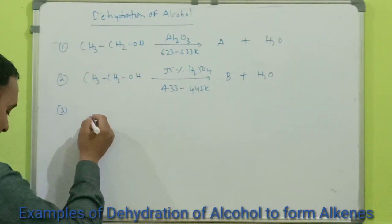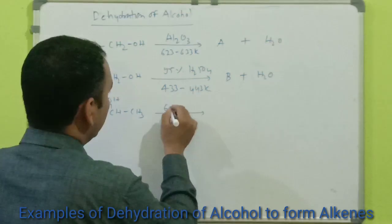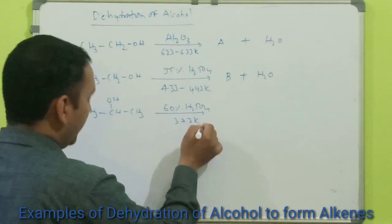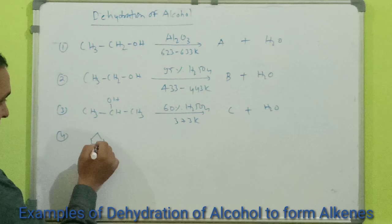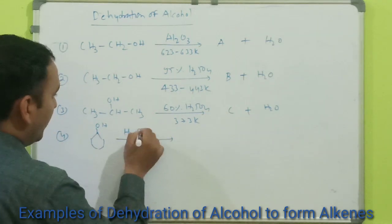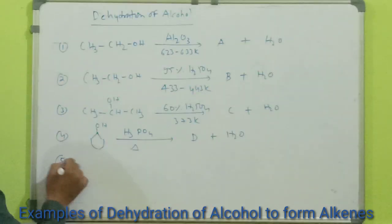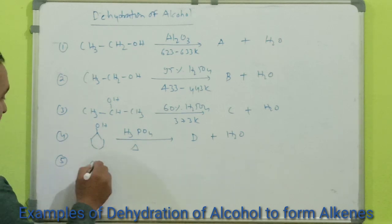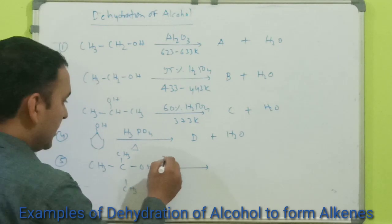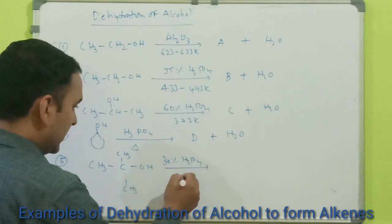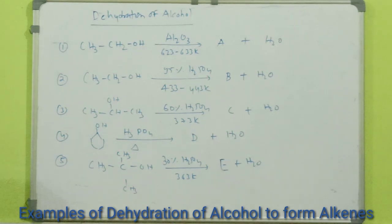The third reaction: propan-2-ol (CH₃CHOHCH₃) treated with 60% sulfuric acid at 373 Kelvin — name the product. The fourth reaction: cyclohexanol with H₃PO₄ in presence of heat — name the product. The fifth reaction: 2-methylpropan-2-ol (CH₃C(CH₃)₂OH) with 30% sulfuric acid at 363 Kelvin — name the product and water molecules.